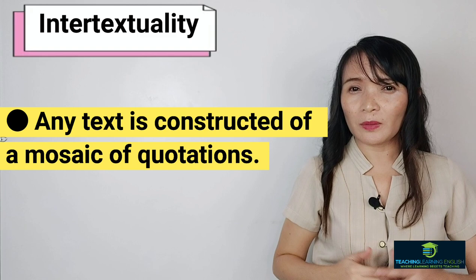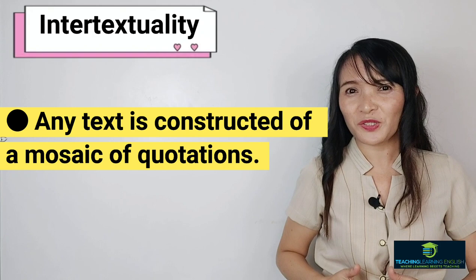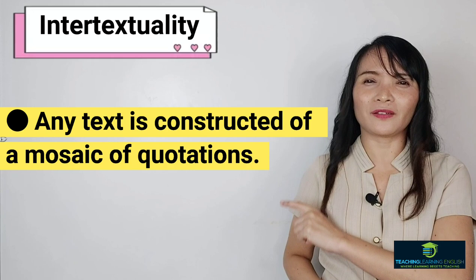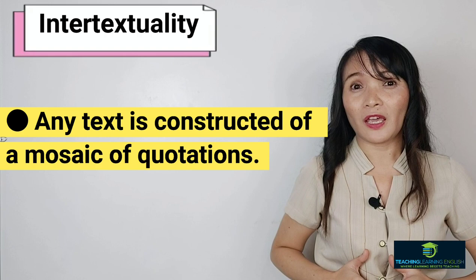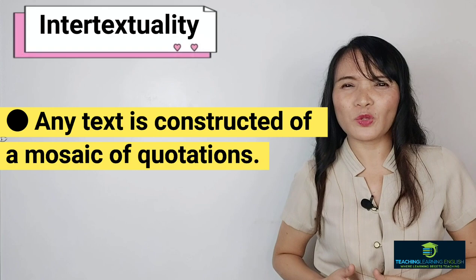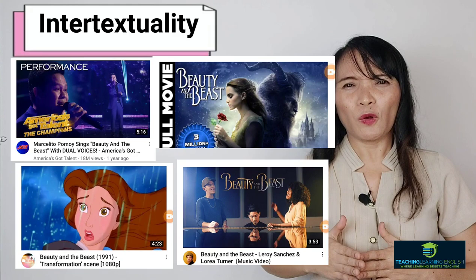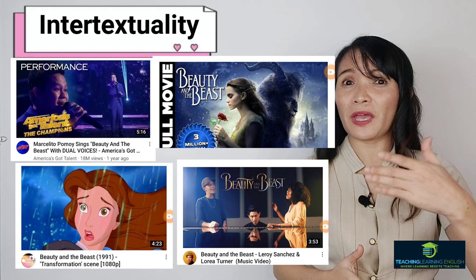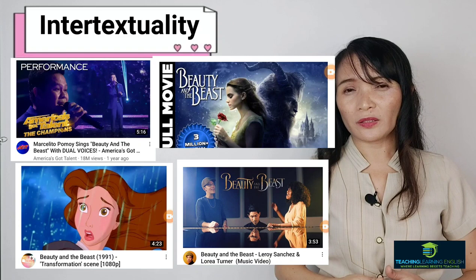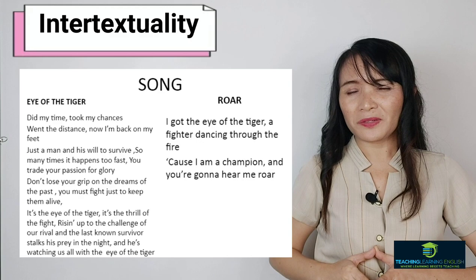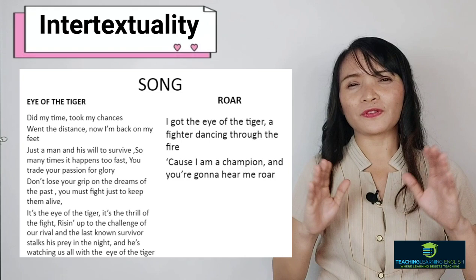Any text is constructed of a mosaic of quotations, and any text is the absorption and transformation of another. The text itself will have meaning if it is written under some context — including the physical and cultural conditions — and is related to other texts. That's why we sometimes wonder, in the field of music, who is the original singer of this song? With so many versions and revisions from different singers, we could no longer trace the original version. Intertextuality can also happen in all forms of art, literature, and music. An example is an author's borrowing and transformation of a prior text, or a reader's referencing of one text in reading another.